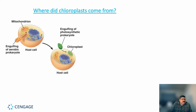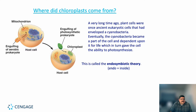Where did chloroplasts actually come from? This has the same storyline as mitochondria. A very long time ago, plant cells were ancient eukaryotic cells that engulfed a cyanobacteria. Eventually the cyanobacteria became part of the cell, and they depended upon it for life, giving the cell the ability to photosynthesize — this is the endosymbiotic theory. The same thing happened with mitochondria: an animal cell engulfed an aerobic prokaryote, noticed it produced power, and kept it.